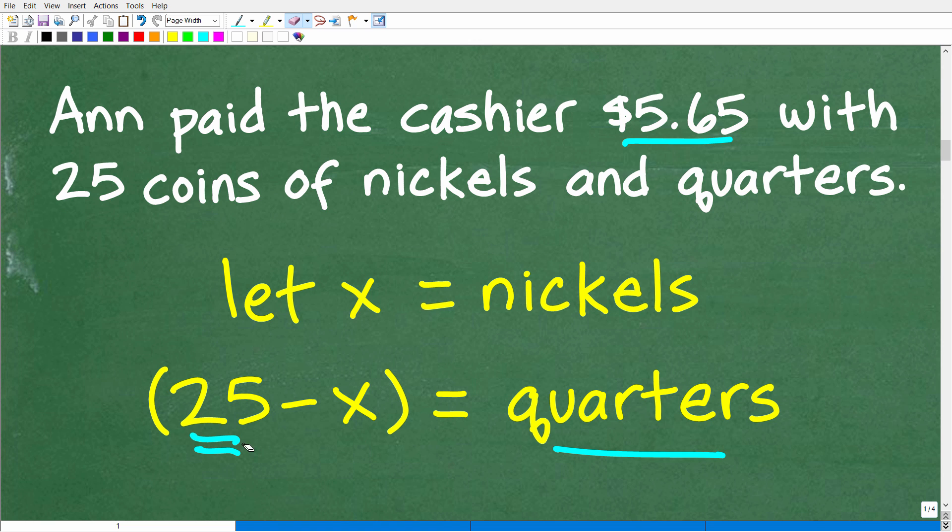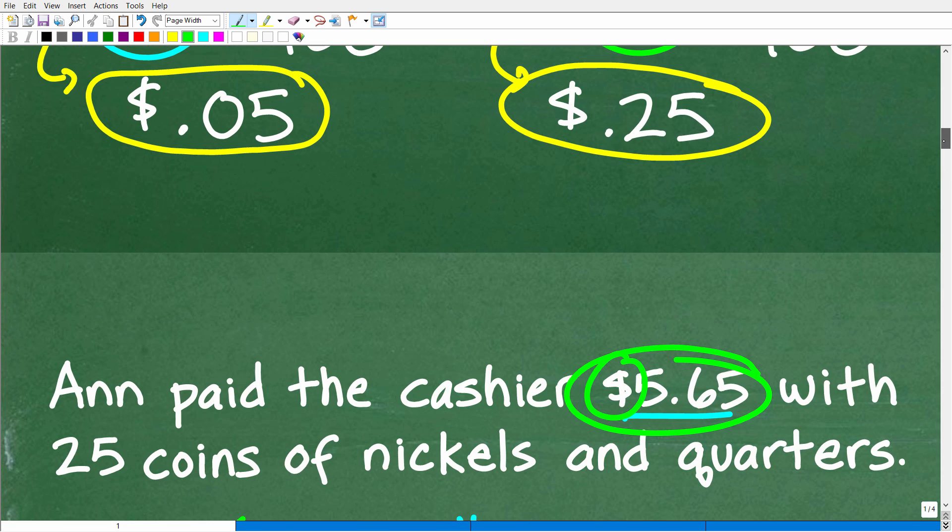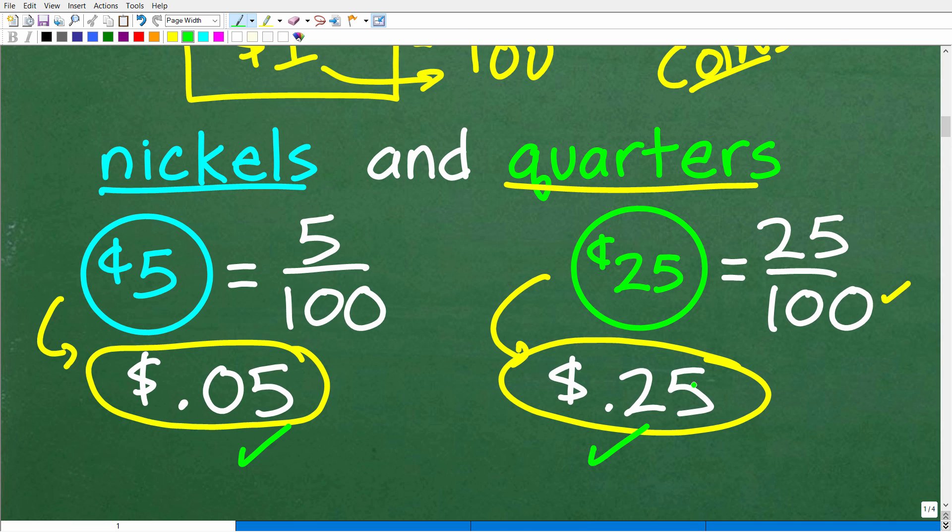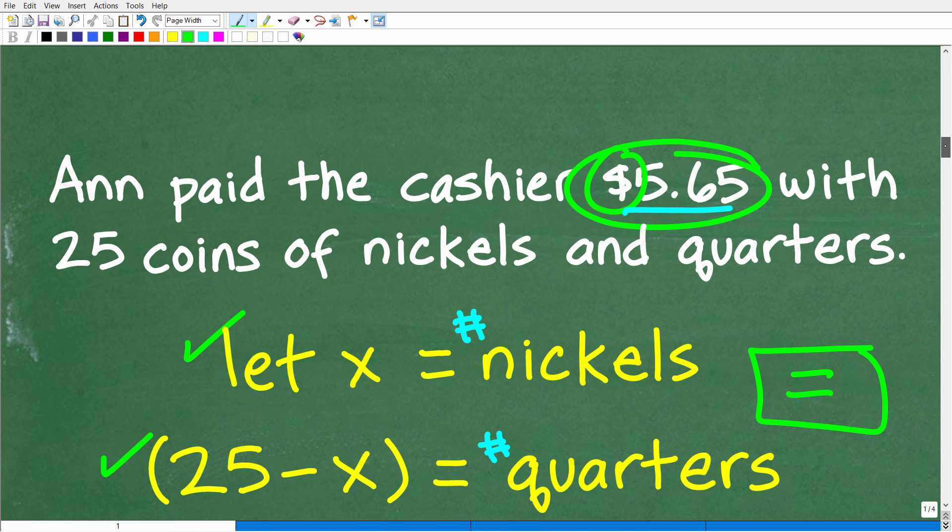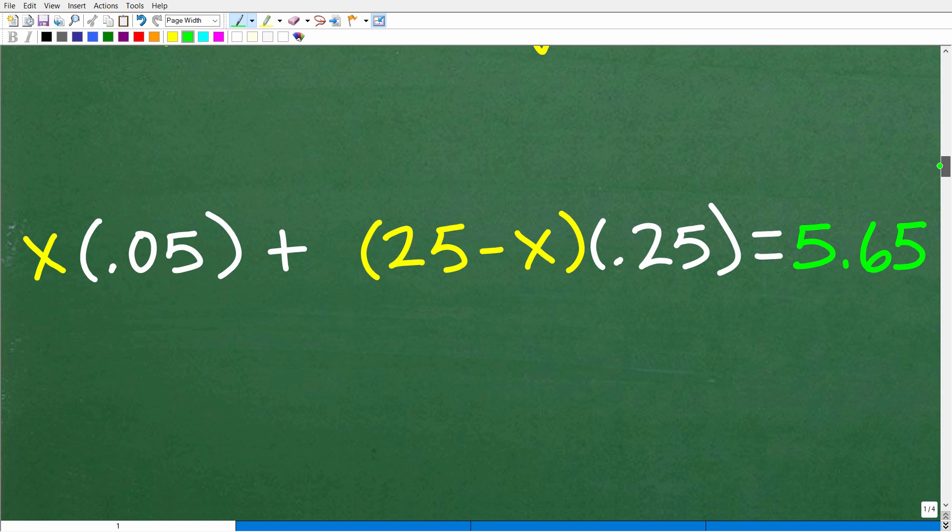All right. Now that we know, or we have some sort of model that represents the number of nickels and the number of quarters that Ann used, then we have to build an equation. It does us no good to have some variables here unless we can solve for these variables. And you can't solve for variables in algebra unless you build an equation. So we're going to have to use the rest of the information in the problem to build an equation. And this part of the problem is going to come in pretty handy. So Ann paid the cashier a total of $5.65. So we're going to use that total amount. We know how many nickels that she used, we know how many quarters that she used, and we also know the value of these respective coins, nickels and quarters, and we have the total amount. So we have enough information to build ourself a lovely equation.